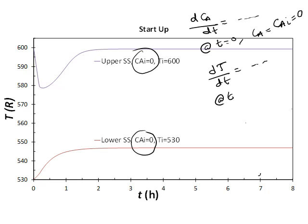For dT/dt, at time equals 0, T equals T-initial. For the lower steady-state, Ti was 530 Rankine, which is 70 degrees Fahrenheit.